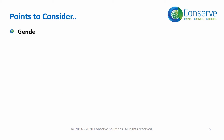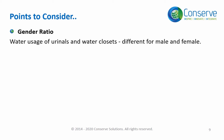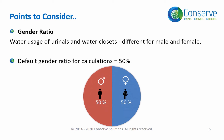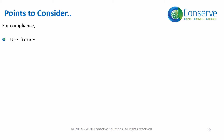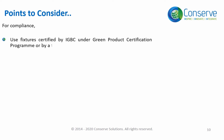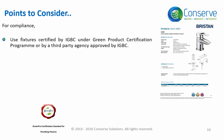Water usage of urinals and water closets is different for male and female occupants. The default gender ratio of 50% shall be considered for the calculation except for special cases, meaning 50% male and 50% female. Plumbing fixtures certified by IGBC under the Green Product Certification Program or any other third party approved by IGBC can also be used to demonstrate compliance. Data sheets of plumbing fixtures demonstrating the flow rate shall be documented for compliance.